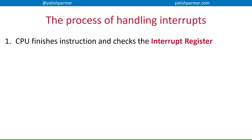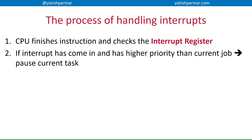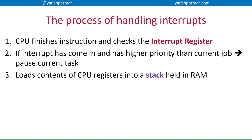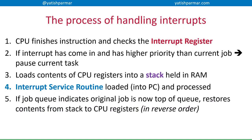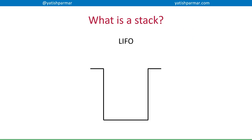During this extra stage, the CPU finishes executing the current instruction and checks the interrupt register. If an interrupt has come in and it has a higher priority than the current job, we need to stop to handle it. Whatever is in the CPU registers gets pushed onto a stack in RAM. The interrupt service routine is loaded into the program counter and those instructions are processed. Once handled, if the original job is still at the top of the job queue, the stack is restored to the CPU registers in reverse order and that job continues — unless another higher-priority interrupt has arrived.